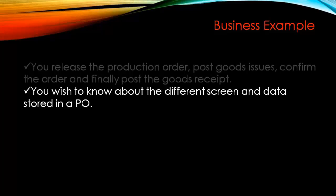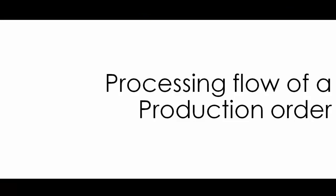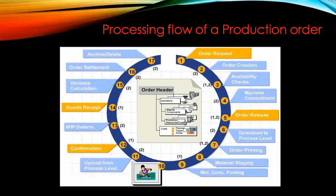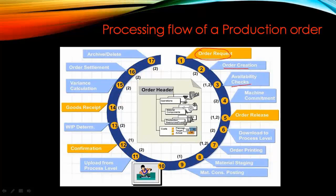Now, the processing flow of a production order — a production order will go through different phases. The important phases are the ones shown in blue; the rest are optional or automatic processes. A production order starts with an order request: first you create the order, then do the order confirmation, an availability check is done, and if we have enough stock, machine commitment is done — which is known as capacity planning. Then we release the order.